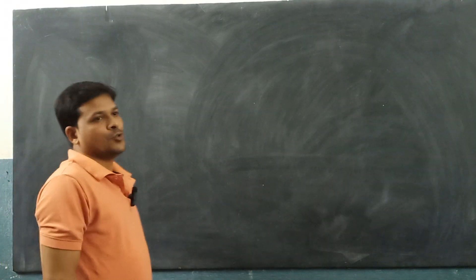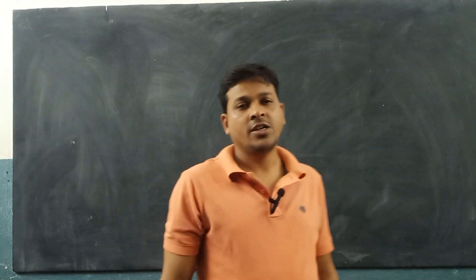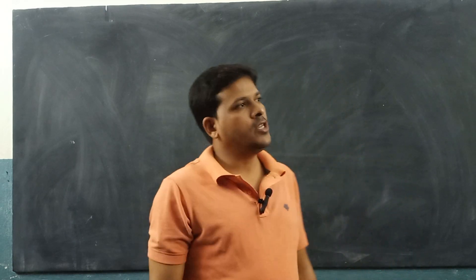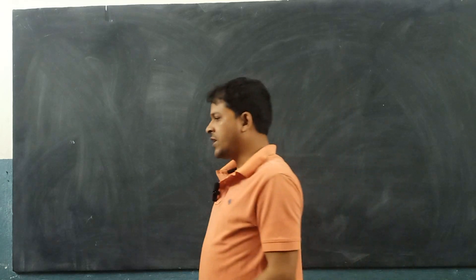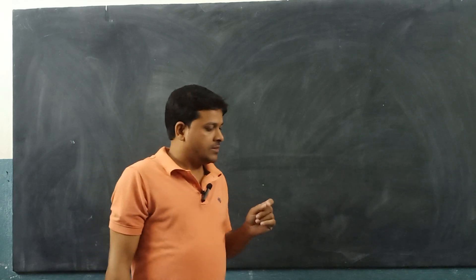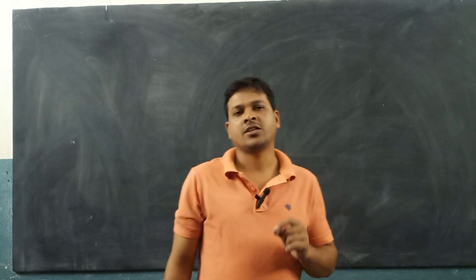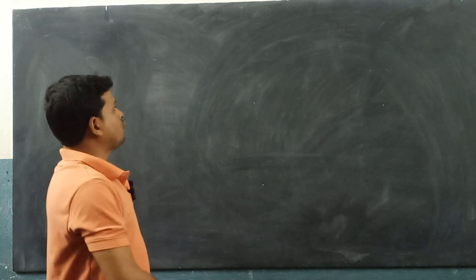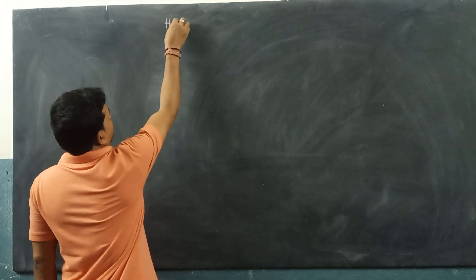Today we will learn about one important form of energy. At the beginning of the class 5 level, we learned different forms of energy like electric energy, heat energy, light energy, chemical energy, and their uses. Today we learn one important form of energy, that is heat.